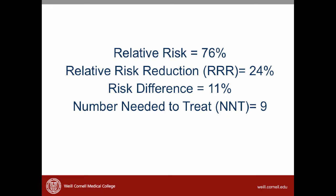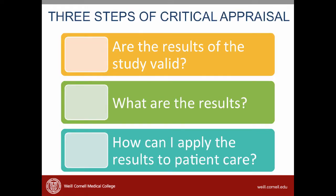To sum things up, we learned how to read the results of an article comparing a therapy to a placebo. In the spironolactone article, the relative risk was 0.76, the relative risk reduction was 24%, the risk difference was 11%, and the number needed to treat was 9 patients. Going back to the three steps of critical appraisal, the last step is: how can I apply the results to patient care? We'll discuss this in class, along with many items from the past few videos. Before class, I'd like you to read through the assigned articles so you're ready to appraise them with your EBM team.